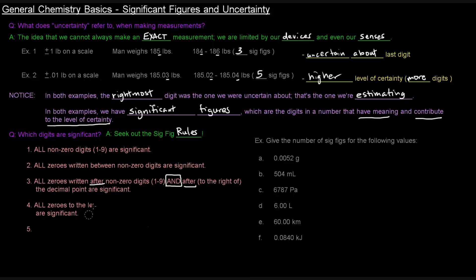Rule number four: all zeros to the left of a decimal but to the right of a non-zero digit are significant. We'll also cover that. And rule number five: all leading zeros are not significant.